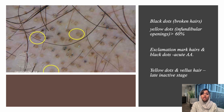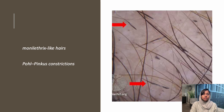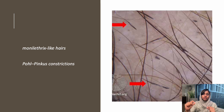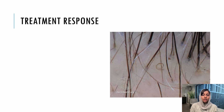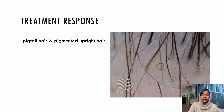As you can see in this image, there are more yellow dots and fewer black dots. This next image shows monilethrix-like hairs with pseudo-Pohl-Pinkus constrictions, which are features of alopecia areata — indicating regular narrowing of the hair shaft. Trichoscopy also helps in evaluating treatment response: you can see coiled hairs called pigtail hairs and pointed hairs, which indicate regrowing hairs in alopecia areata.